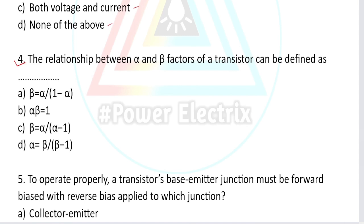Question number four: The relationship between alpha and beta factors of a transistor — option A: beta equal to alpha by 1 minus alpha; option B: alpha times beta equal to 1; option C: beta equal to alpha upon alpha minus 1; option D: alpha equal to beta by beta minus 1. The relationship is: alpha equals beta divided by beta plus 1, or equivalently beta equals alpha by 1 minus alpha.